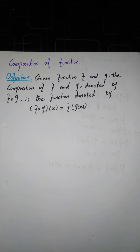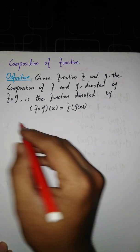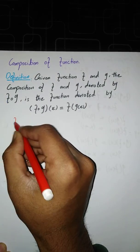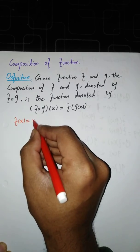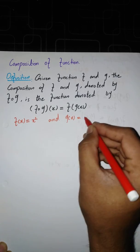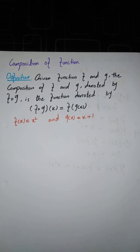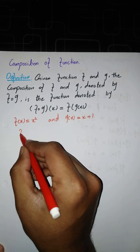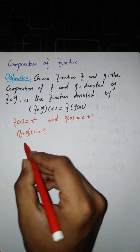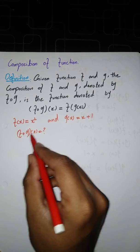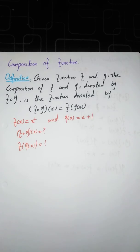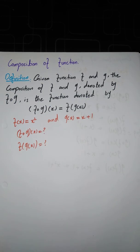To understand this definition, let's take an example. We have two functions: f(x) = x² and g(x) = x + 1. If we want to find f∘g, we write (f∘g)(x) = f(g(x)). So we need to find f(g(x)).